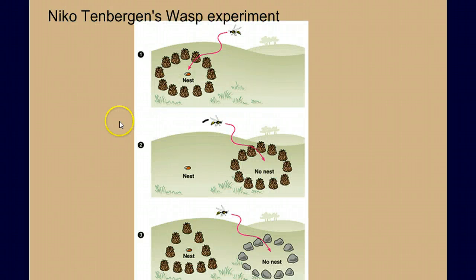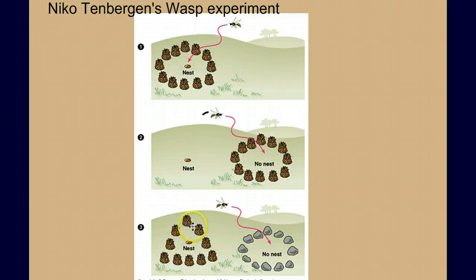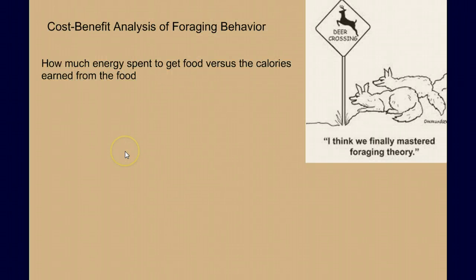In review, we also studied Tinbergen's wasp experiment, which showed that wasps use visual landmarks to locate their nests. He outlined the nest, the wasp moved the pine cones, came back and looked in the wrong location, and later when he put the pine cones back in a triangle, the wasp moved toward a circle. We discussed that one in class, so I'm not going to go into too much detail here.